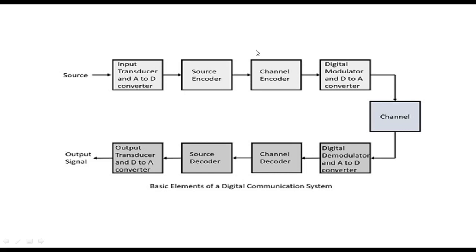You encode the source, then you encode the channel. Then you modulate that into a digital modulator, and then to a converter. This digital-to-analog conversion is optional. Then you digitally transmit it. Anyway, you need a digital modulator for that.